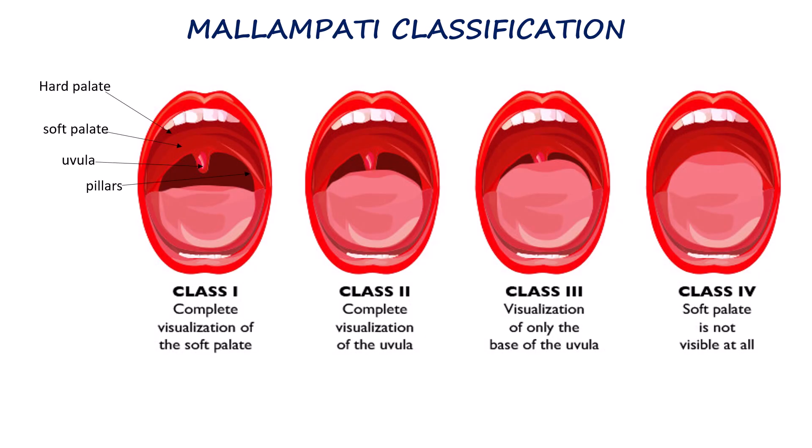M in LEMON stands for Mallampati, referring to the modified Mallampati classification, which assesses the visibility of certain structures during maximal mouth opening with the tongue protruded. The patient is seated upright, instructed to open the mouth fully and stick out the tongue without making any sound. In class 1, the soft palate, fauces, uvula, and pillars are visible. In class 2, the soft palate, fauces, and uvula are visible but the pillars are not. In class 3, only the soft palate and base of the uvula are visible. In class 4, only the hard palate is seen. Progressively higher classes correlate with reduced oropharyngeal space and a greater likelihood of a difficult laryngoscope view.